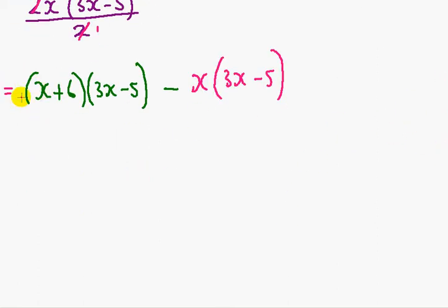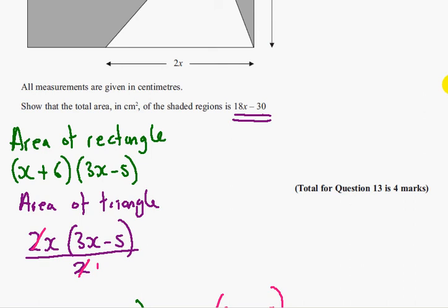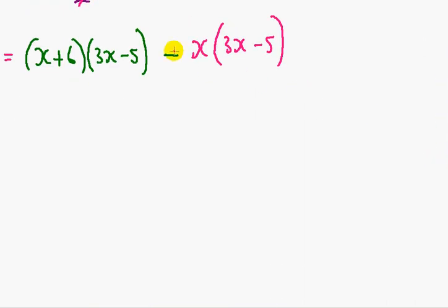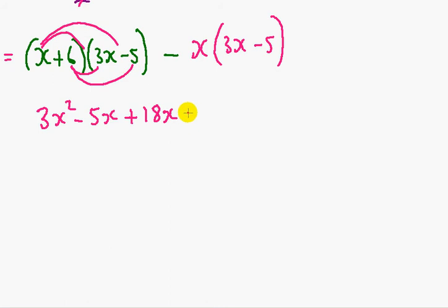So now we're working out the area of the shaded region. We need to get it to 18x minus 30. So we need to start multiplying out these brackets. First of all, x times 3x is 3x squared. x times minus 5 is minus 5x. 6 times 3x is positive 18x. 6 times minus 5 is minus 30.